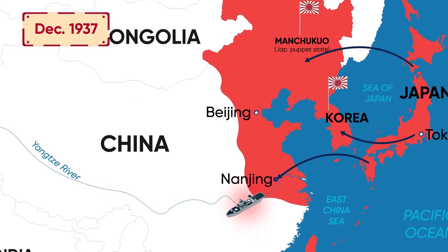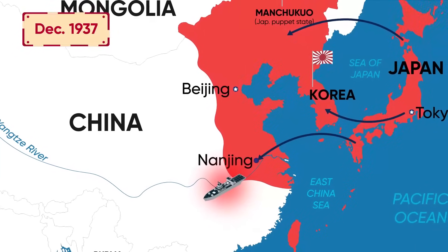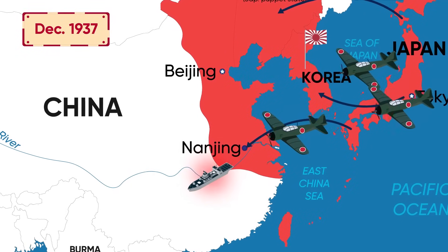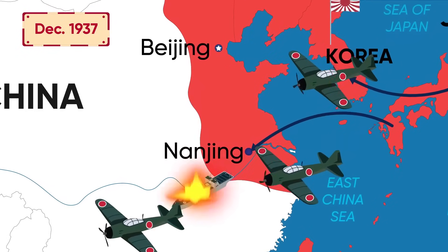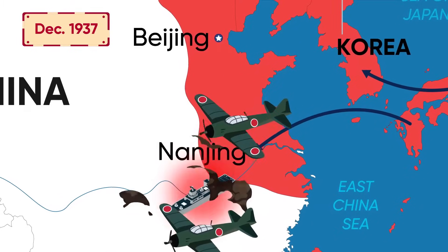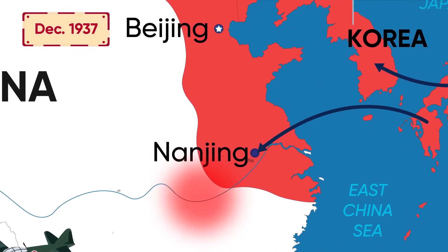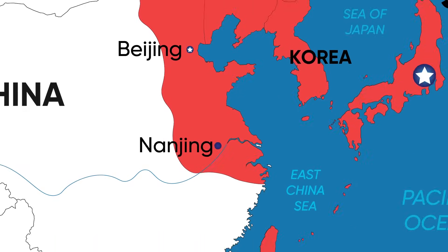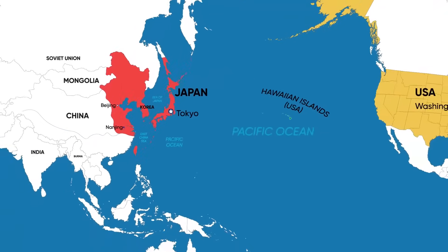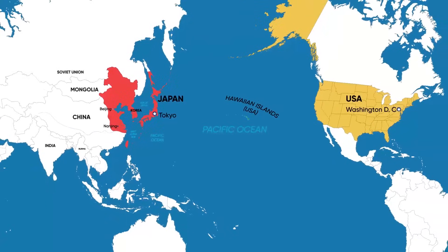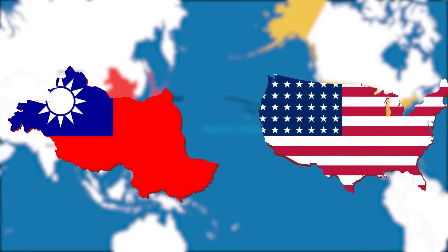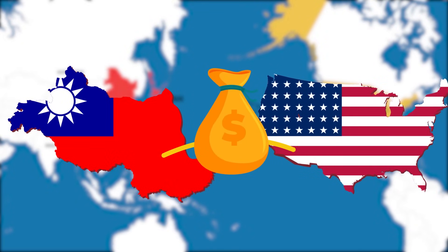In December of the same year, the Japanese army mistakenly bombed the American gunboat Panay anchored in the Yangtze River outside Nanking, killing three Americans. The incident led to increased sympathies for China and anger towards Japan in the United States. In response to this aggression, the US government extended its first loan to China.